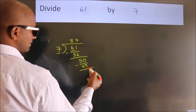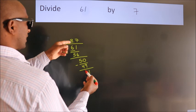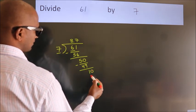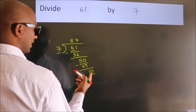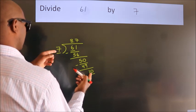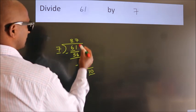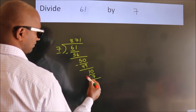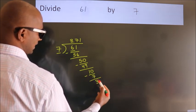After this, we already have the decimal. So, directly take 0. So, 10. A number close to 10 in the 7 table is 7 times 1, 7. Now, we subtract. We get 3.